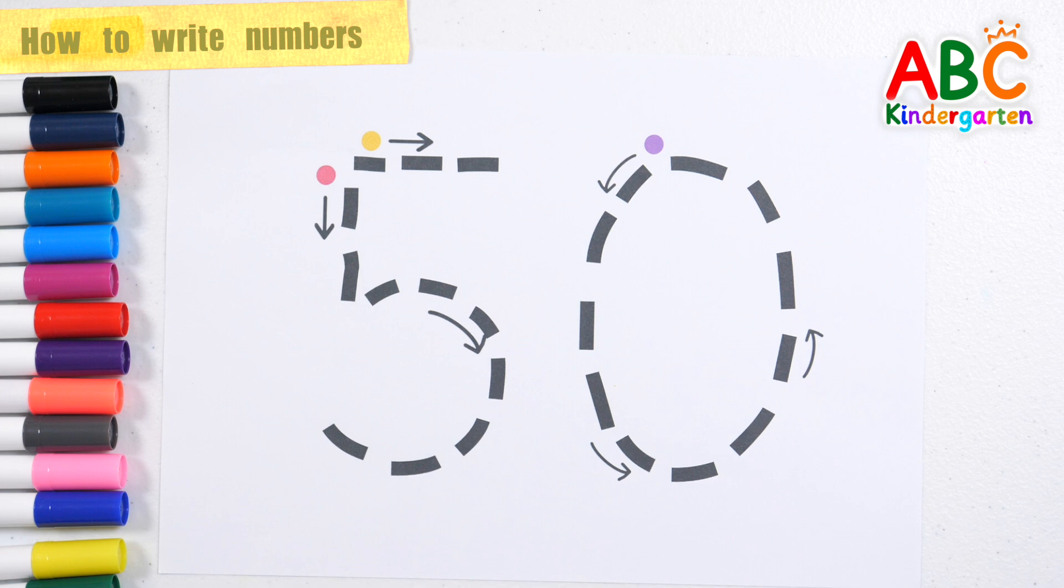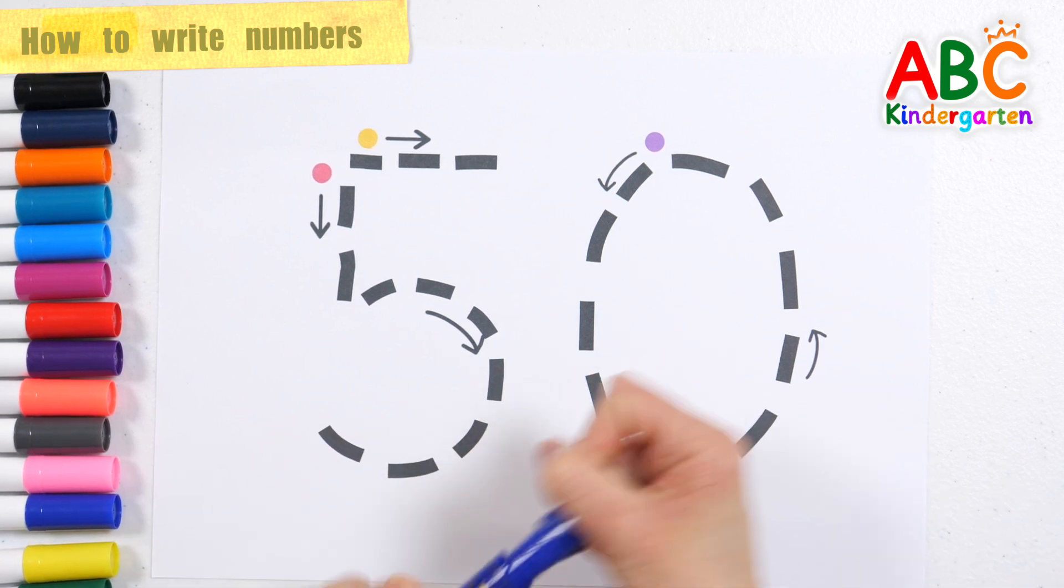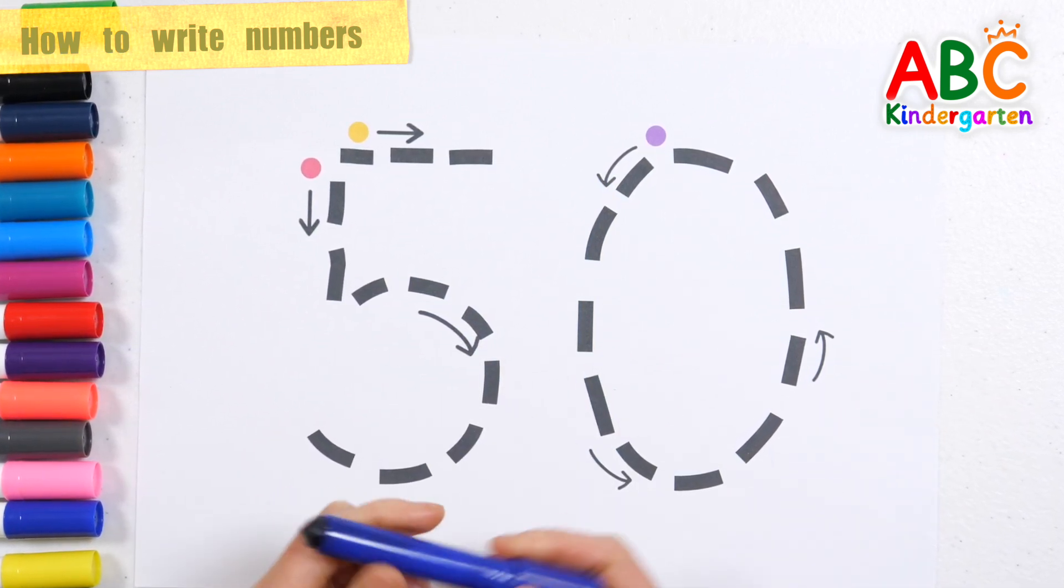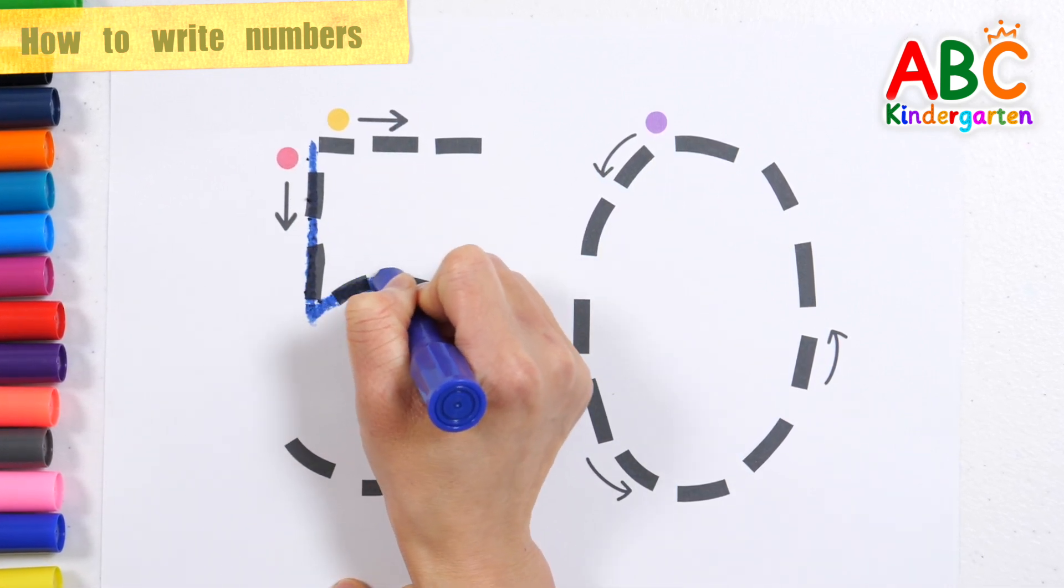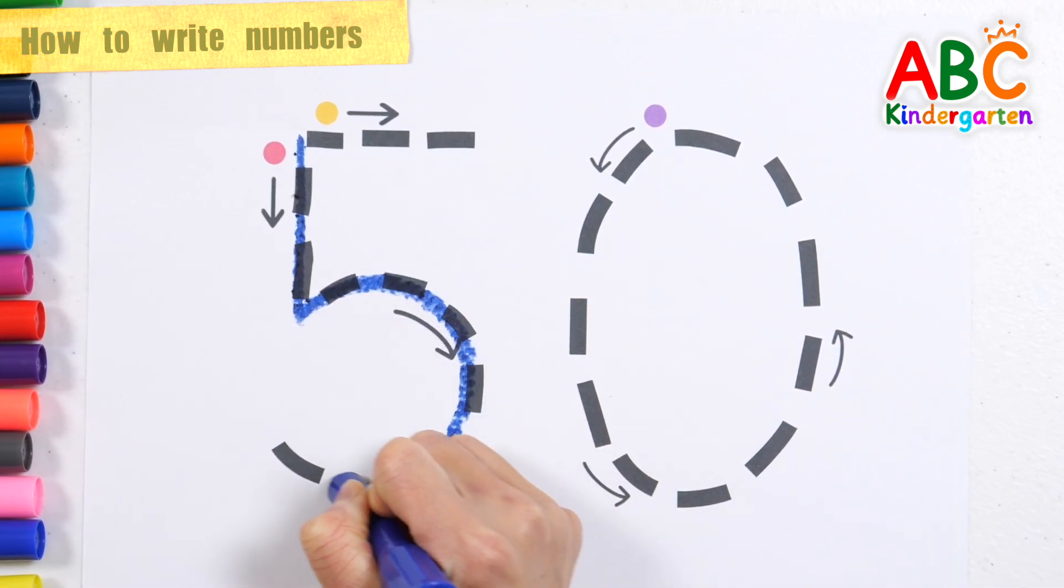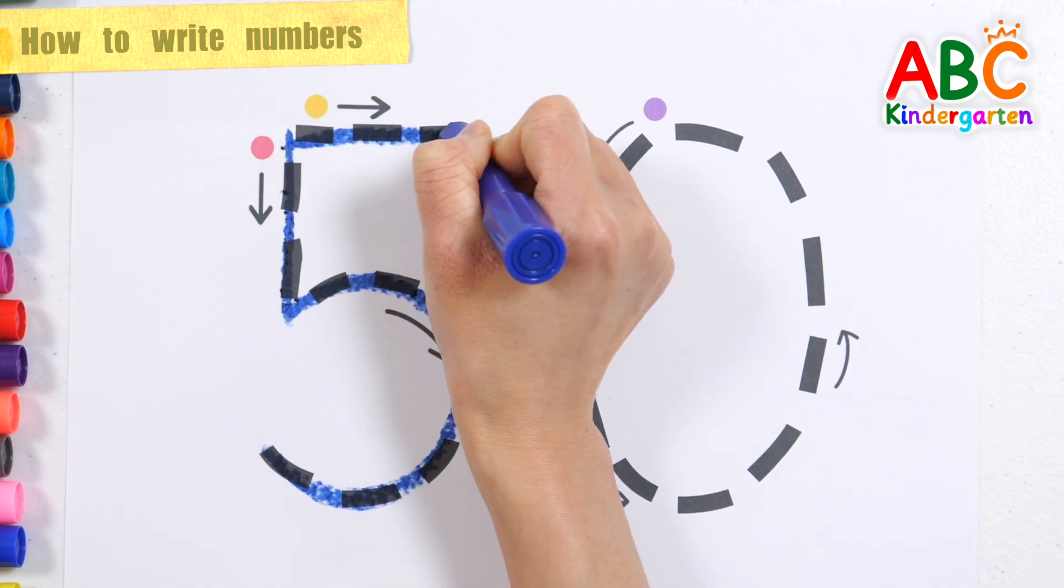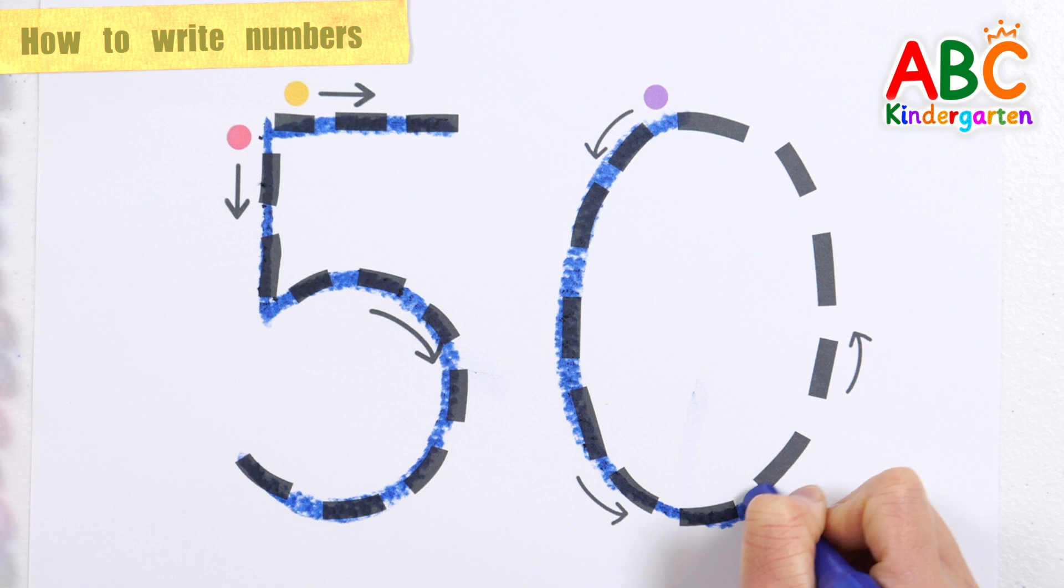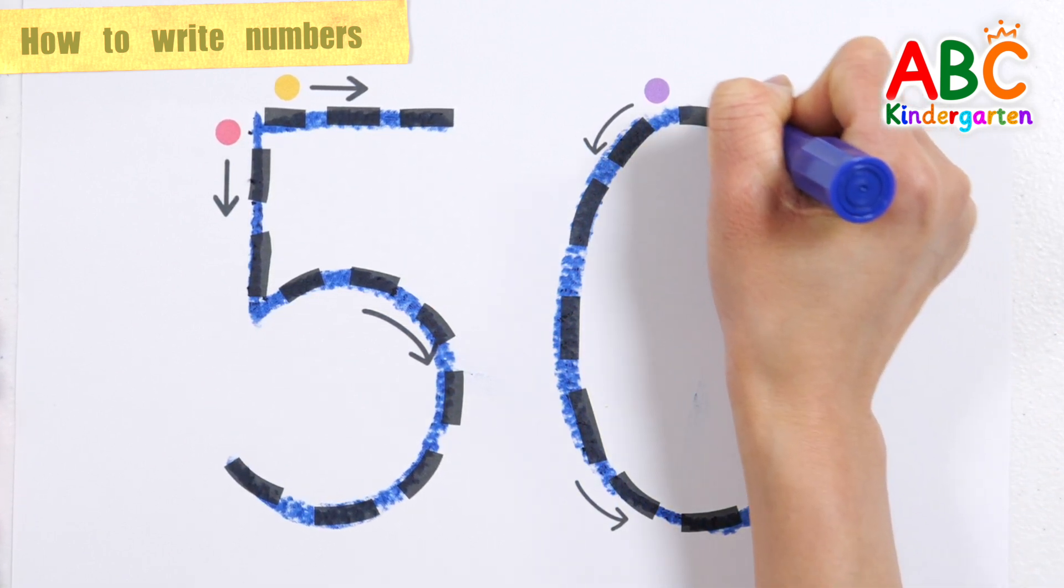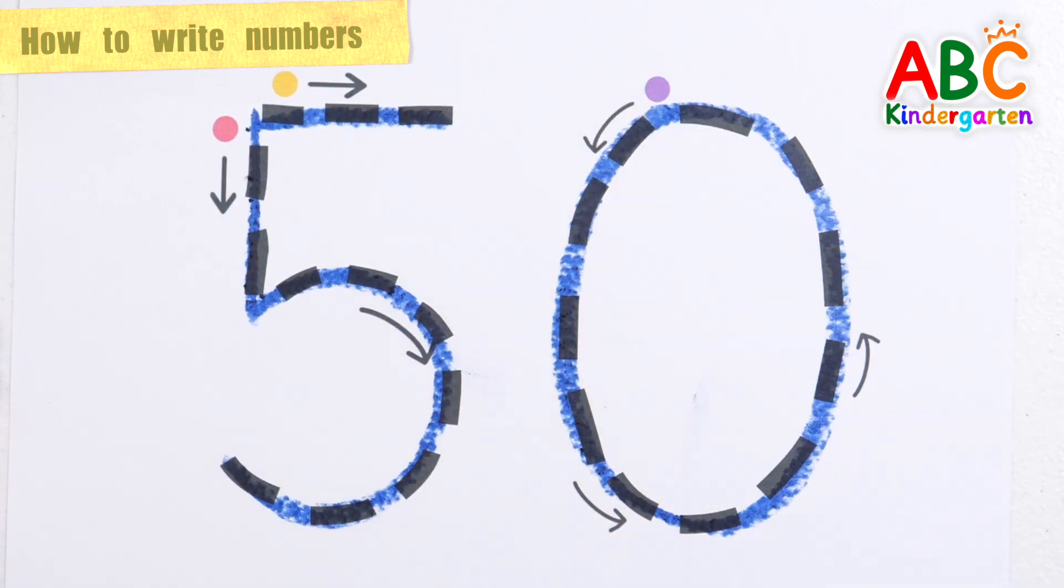Let's write down the numbers following the arrows in the order of red, yellow, and purple. 50. Great job!